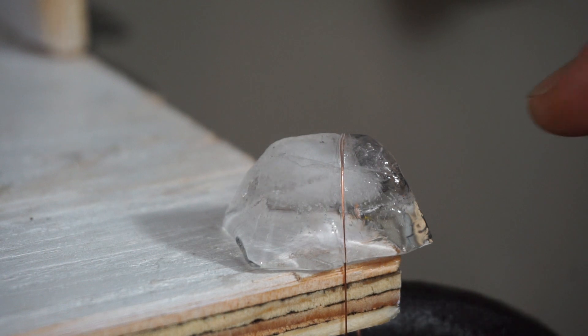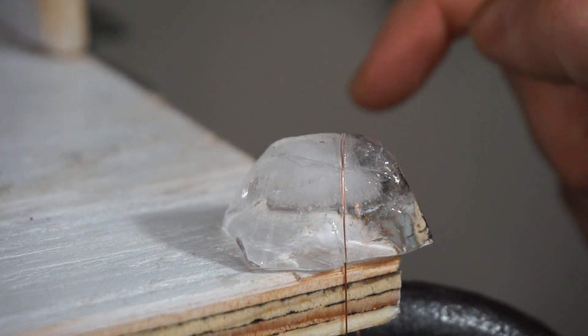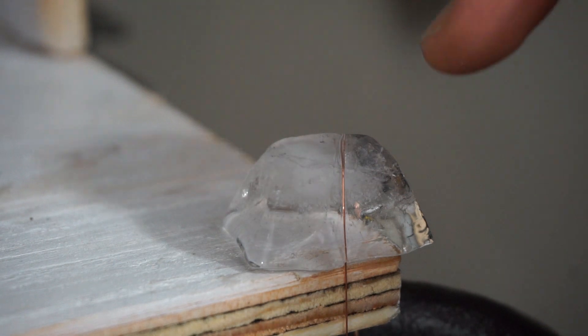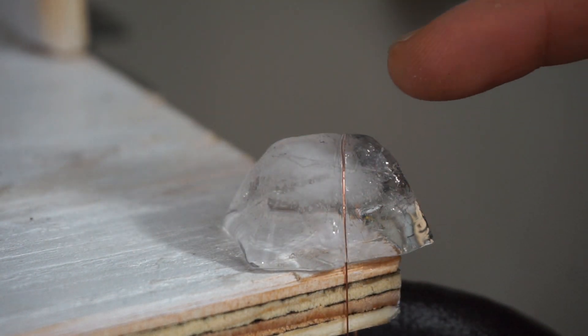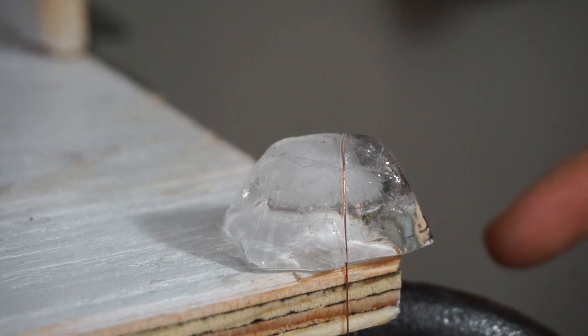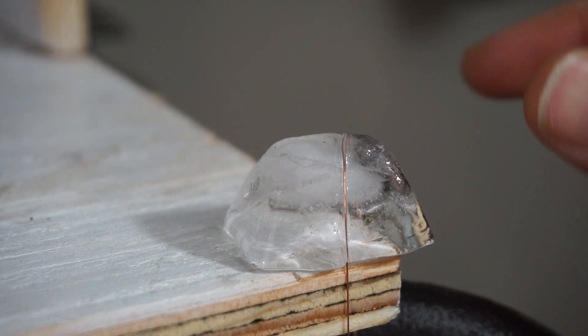So what's happening here is the wire is putting a lot of pressure right in the center and it's melting the ice. But the ice is still at freezing, and so as soon as the wire cuts past it, it freezes back together. So the goal here is to get the wire to cut through the piece of ice and then you still have a whole piece of ice at the end.